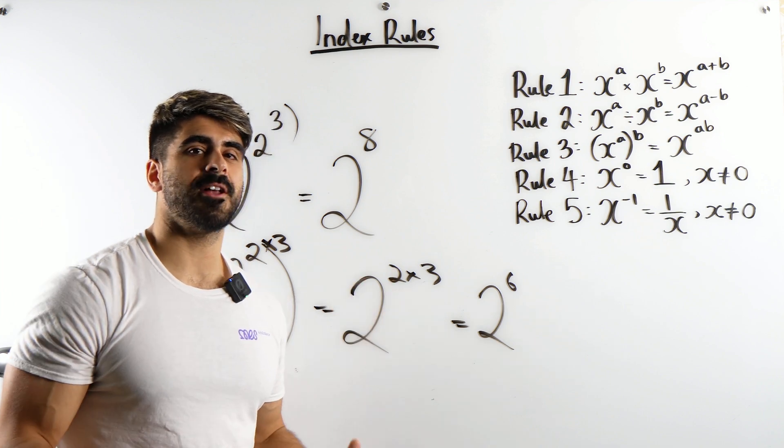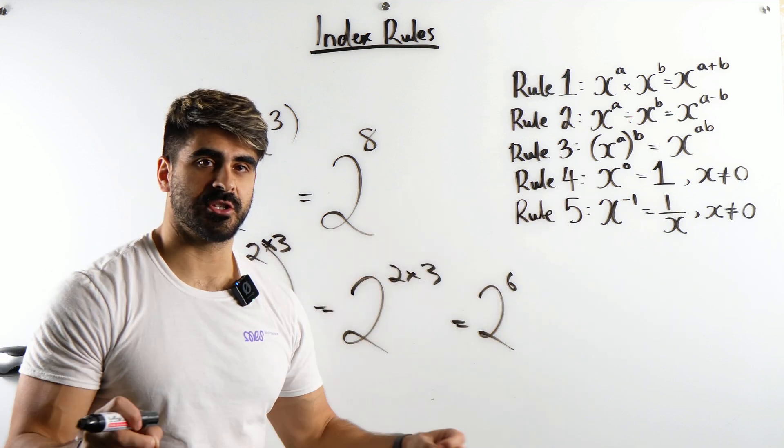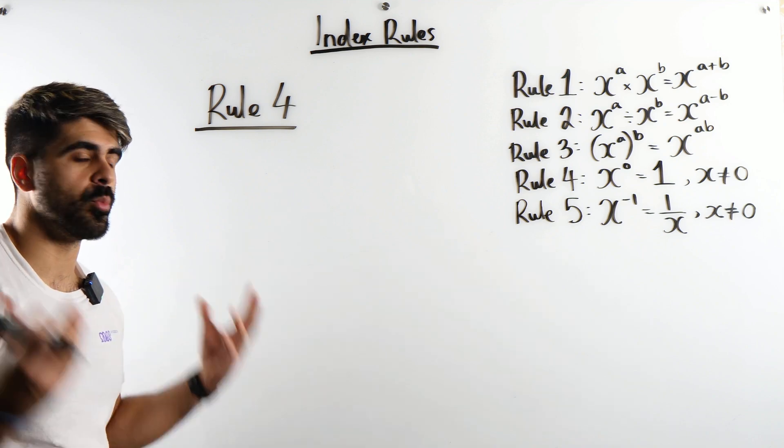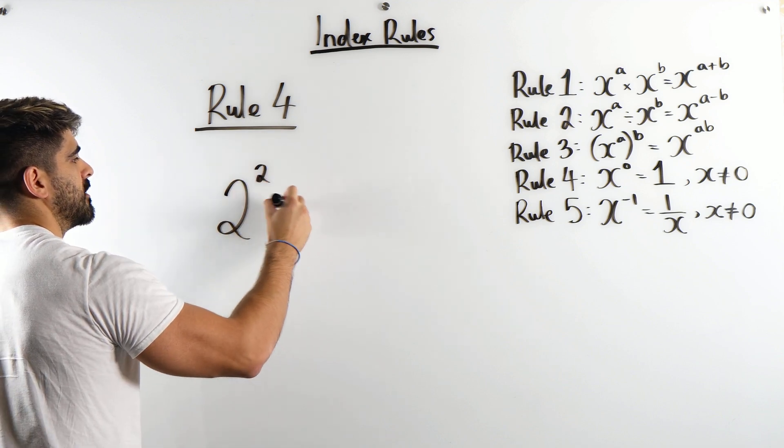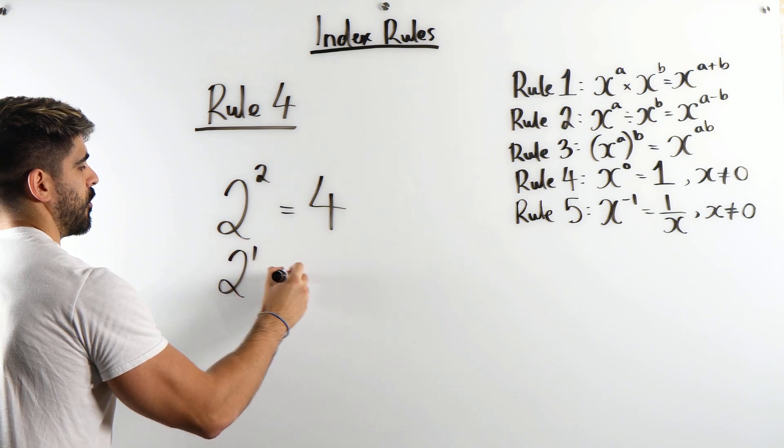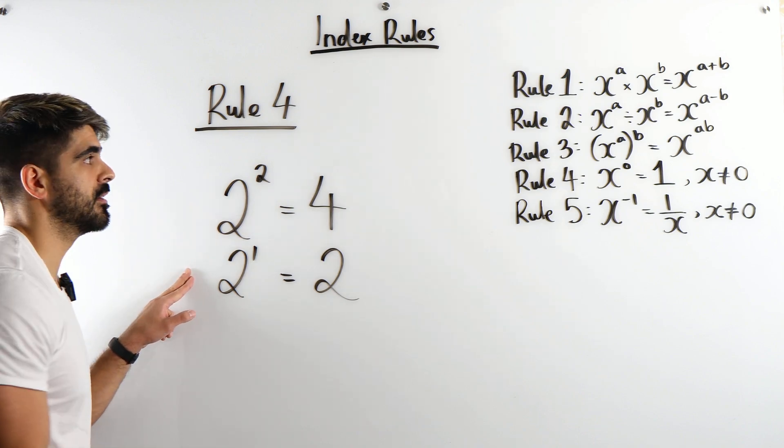Now let's take a look at rule 4. When you raise any number to the power of 0, you get 1, provided the base number is not 0. Rule 4. Anything to the power of 0 is 1. Take a look at this. We all know 2 squared is 4, right? We know 2 to the power of 1 is 2.